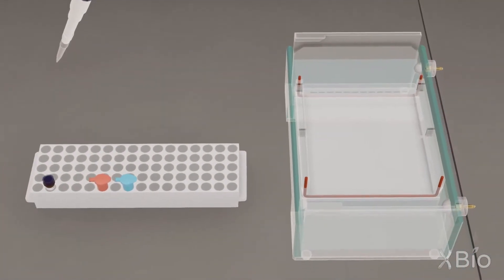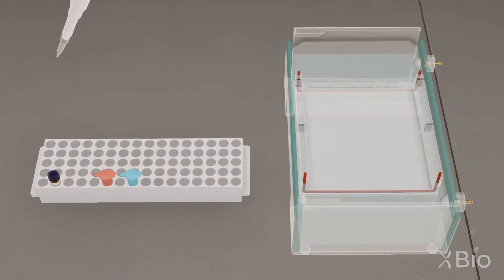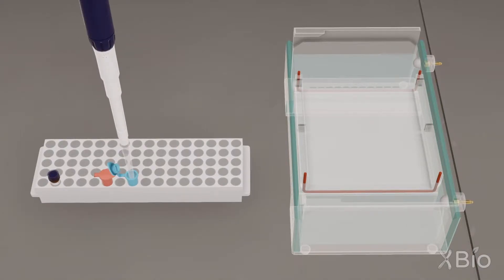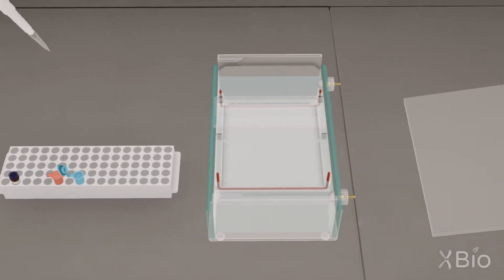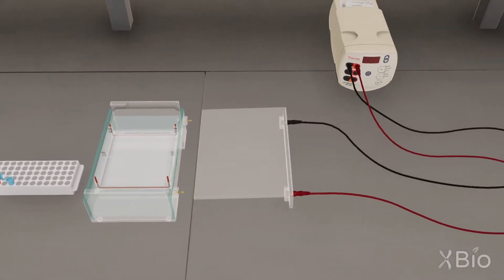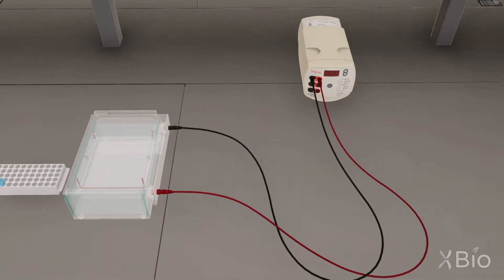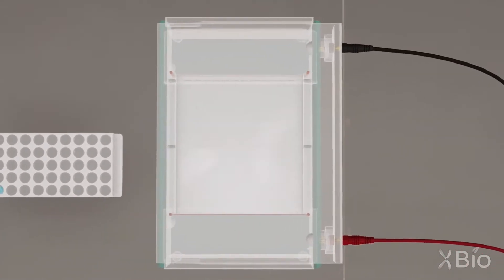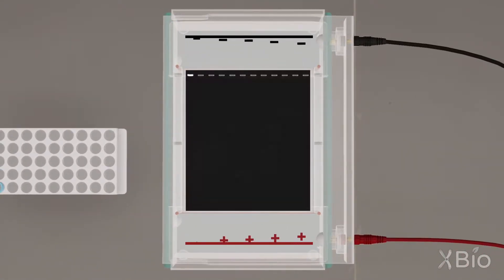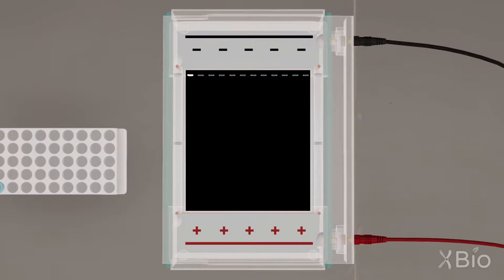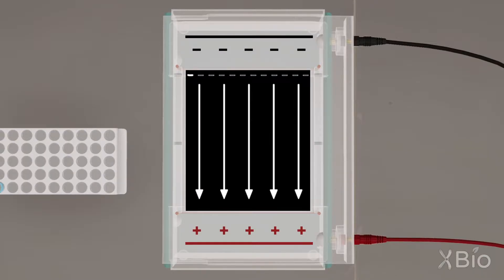Let's see what happens when we perform electrophoresis on this sample. We can use a pipette to transfer a small amount of the sample into a well in the gel. Once the sample is loaded, we can connect the gel apparatus to a power source and apply a current. The resulting electric field exerts a force on the negatively charged molecules and they migrate towards the positive terminal.